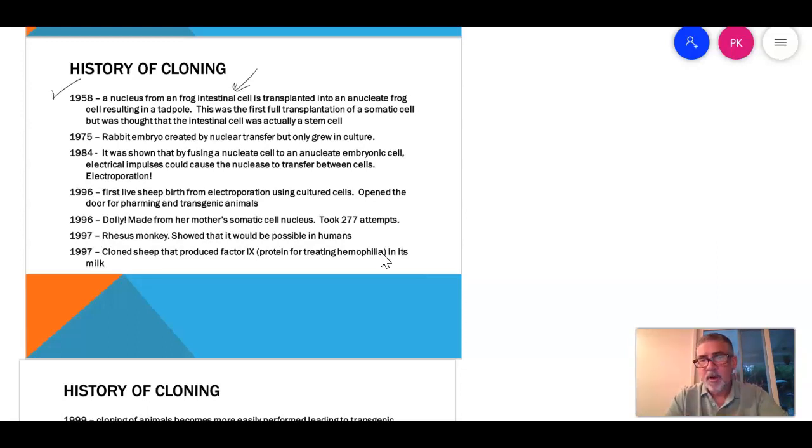Now, frogs are great species to use. Their genome's not super large. Their cells are pretty big. But we're showing that we can do something. So 1975, we go to mammals, or we go to a more advanced species. We had nuclear transport, but it only grew in culture.